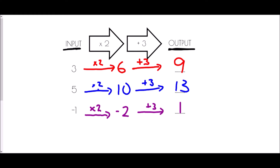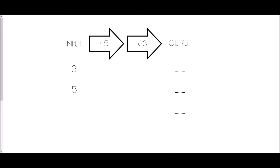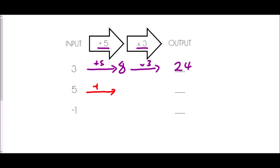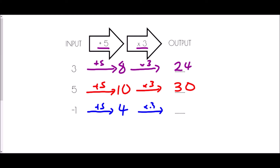We'll try a different function machine. This time the first step is to add five, then times three. Beginning with input three: three plus five is eight, then eight times three is 24. With input five: five plus five is ten, then ten times three is thirty. With negative one: negative one plus five is four, then four times three is twelve.